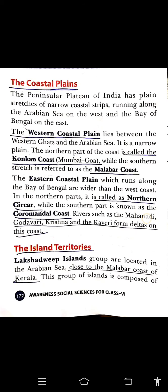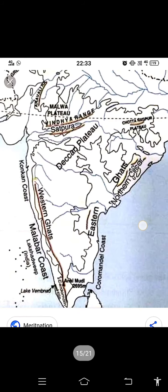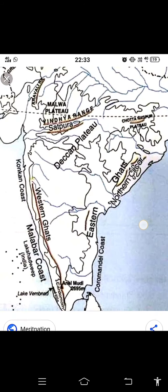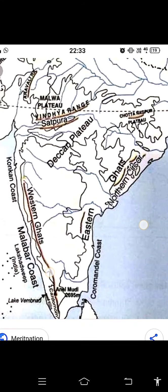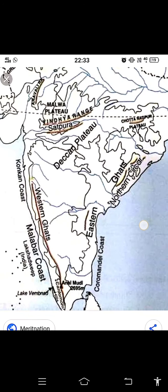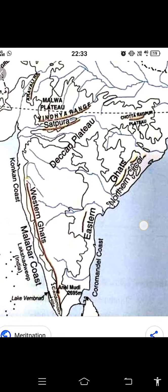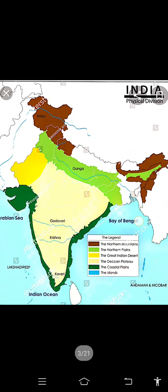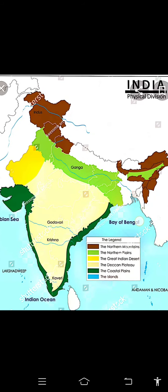This was yesterday's homework — I hope you all have done it. These are five questions you have to do in your notebook. Now we are going to read about the coastal plains. The Peninsular Plateau of India has been stretched on narrow coastal strips. This is the lower part of India. These narrow coastal strips run along the Arabian Sea on the west side and the Bay of Bengal on the east side. This is the eastern coastal part and this is the western coastal part — these are the coastal plains.